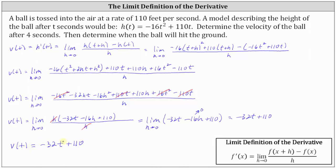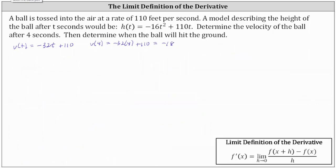We can now determine the velocity at any time. We're asked to find the velocity after four seconds, and therefore we need to find v of four. v of four is equal to negative 32 times four plus 110, which is equal to negative 128 plus 110, which is equal to negative 18. The velocity is negative because the ball is moving downward, and the units are feet per second. The velocity after four seconds is negative 18 feet per second.